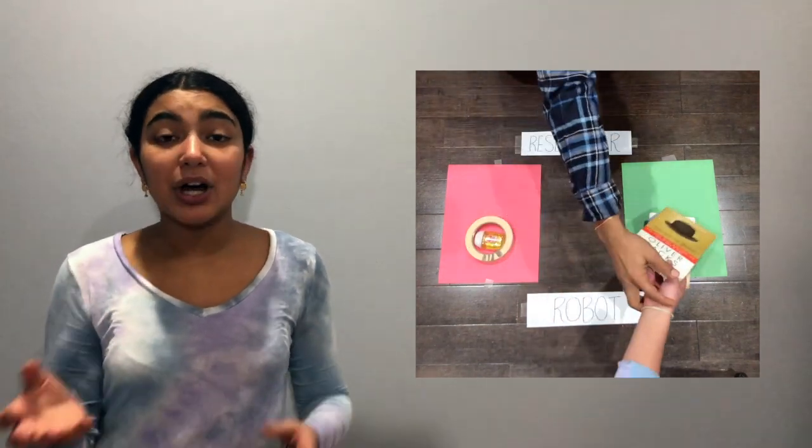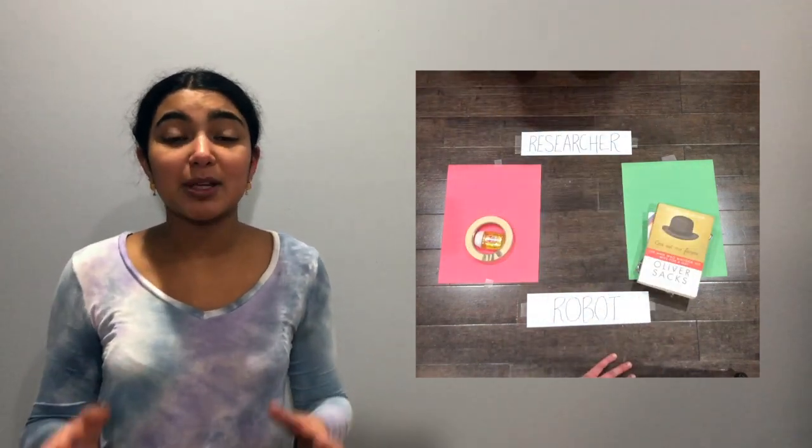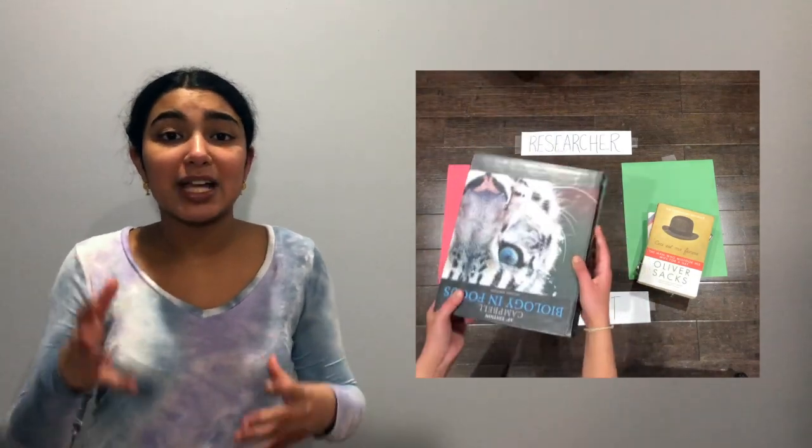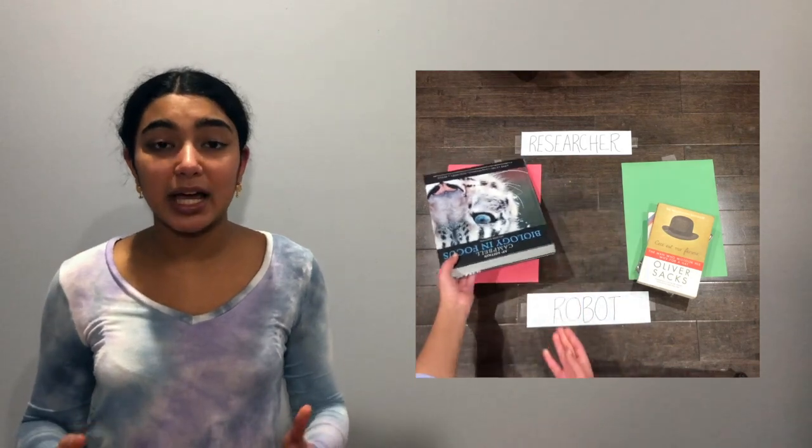but what if you showed me a textbook? All of the books in the training data happen to be light and small, so the model came to associate that with being a book. Now when I'm shown with a large and heavy object, I'm not likely to put that in the correct category.